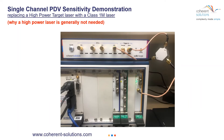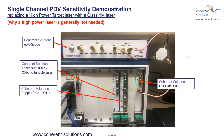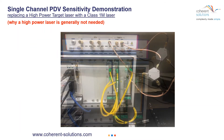For this single-channel PDV experiment, here's the actual equipment we'll be using. We have an EPIC scope, a 2-channel laser, a Doppler blade, an ODE converter, and an electrical splitter. When you hook these all up, this is what it looks like.